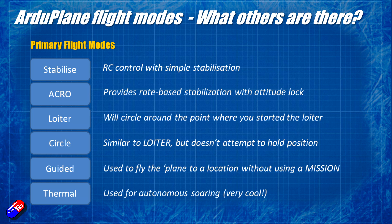Loiter in ArduPlane circles around the GPS point where you started the loiter — that location becomes the center of the circle. Of course, with a plane we can't hover like an ArduCopter can. Circle is similar to Loiter but doesn't attempt to hold position, so if the wind is blowing it will drift. I tend to use Loiter more than Circle because if it's gusty, Loiter will try to maintain that position.